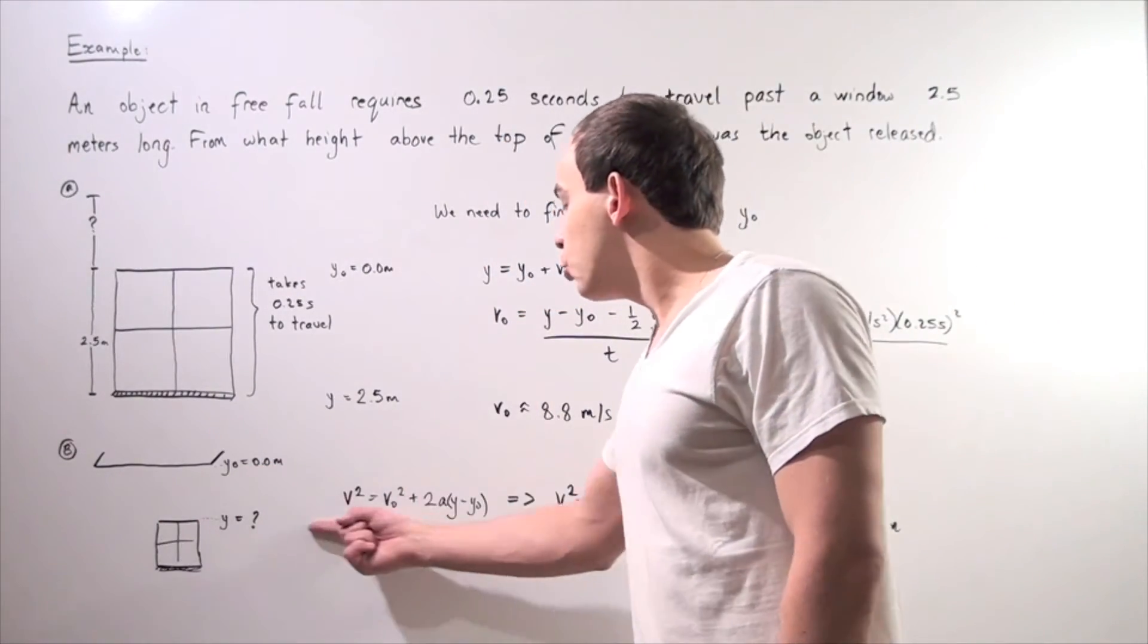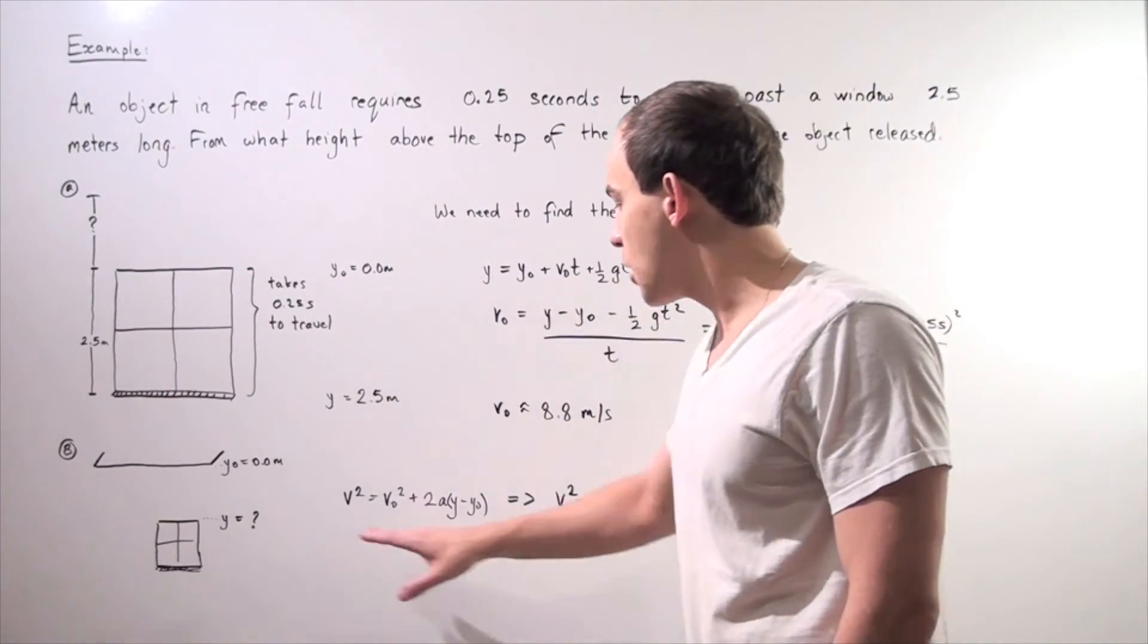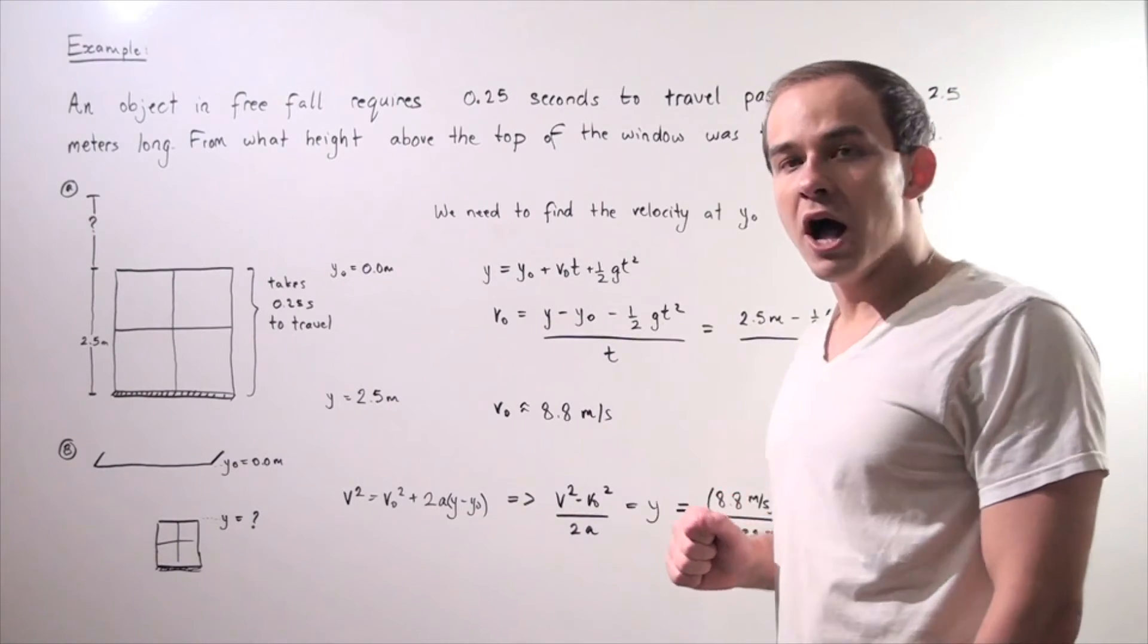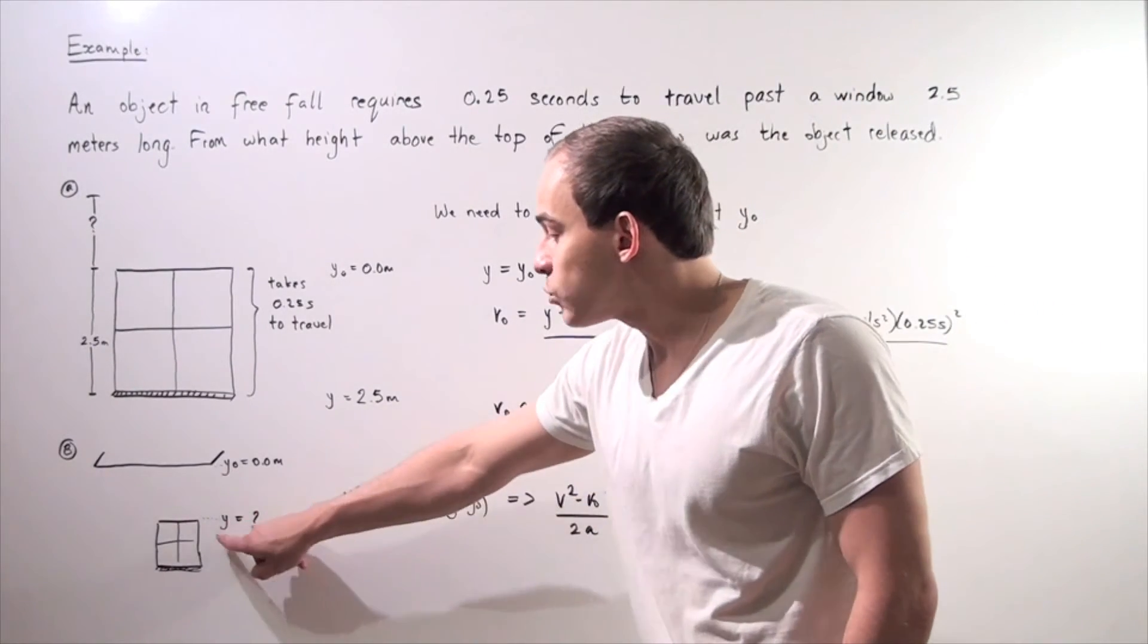We could once again use one of our equations for uniform acceleration. So let's use this equation. Why? Well, because we know what our final velocity is. That's what we found.